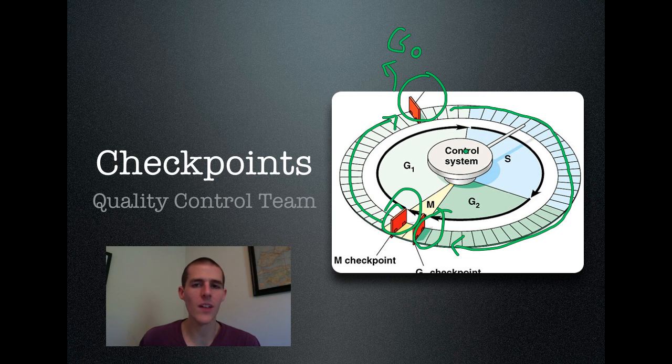G0 is a non-dividing phase where the cell will just kind of hang out until either things get straightened out, it's needed, or the body decides it is time for that cell to go away. So, G0 is a non-dividing phase. Most cells, if they make it through this G1 checkpoint, they are going to continue all the way through and actually divide.